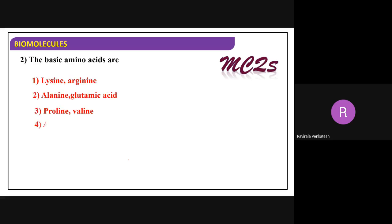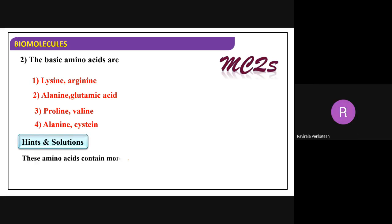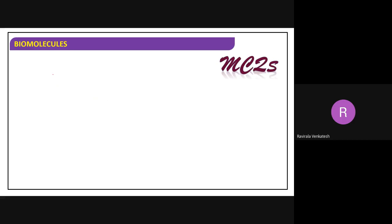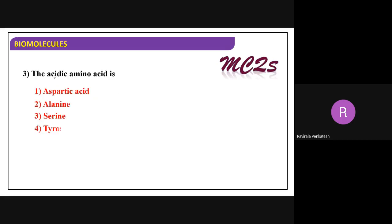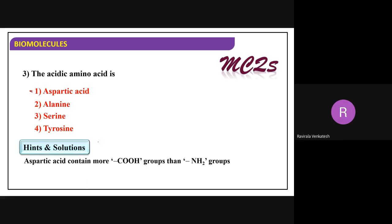Basic amino acids - lysine and arginine. Lysine is having an NH2 group, and arginine also has an NH2 group, so they are basic. For acidic amino acids - the name itself tells you: aspartic acid and glutamic acid are acidic amino acids.